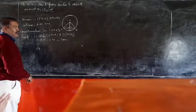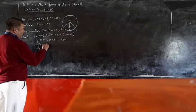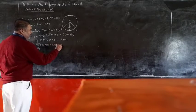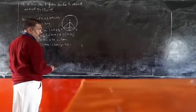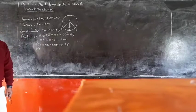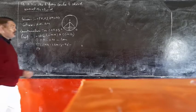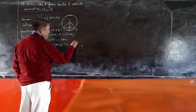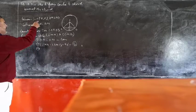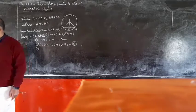The second fact: angle OMA is equal to angle OMB, and both are equal to 90 degrees. What is the reason? Because OM is perpendicular on AB — this is given. So both angles are 90 degrees, and the reason we write is: given.